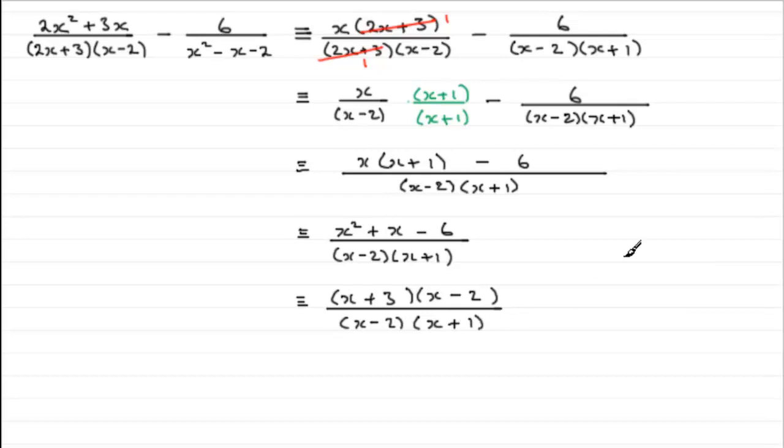And just as we kind of thought, you can see that we've got a common factor here of x minus 2. So we can cancel that one out with that one. So what we're left with is x plus 3 on the top, all over x plus 1.